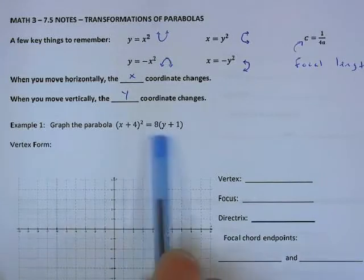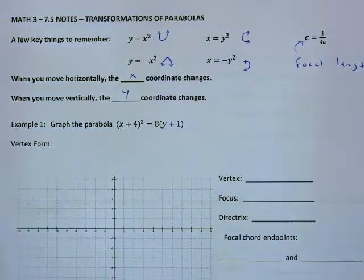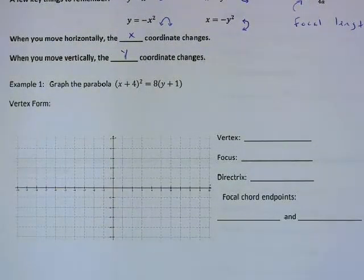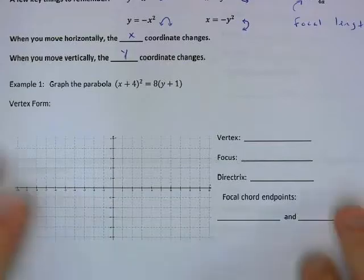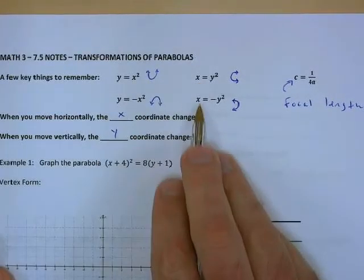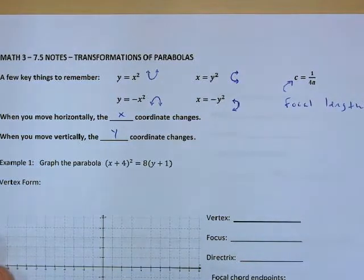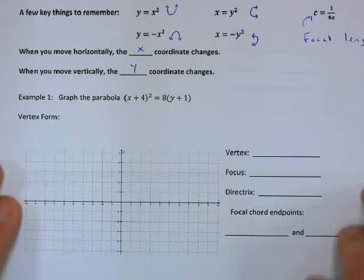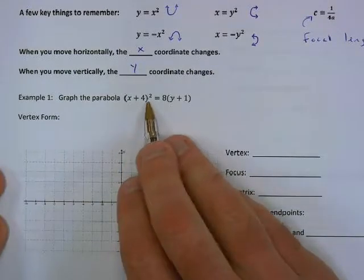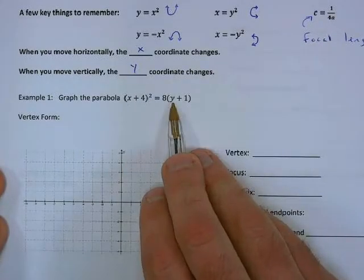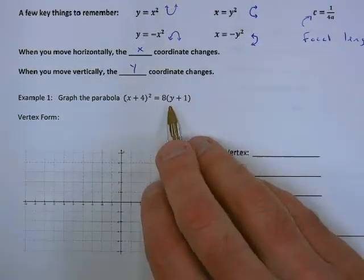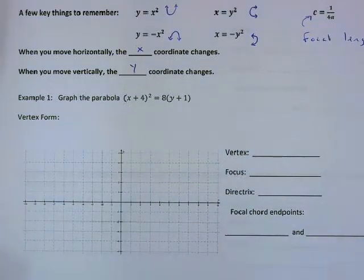First, identify which variable to isolate — the one raised to the first power. On the other side of the equals sign we have the squared part. Here we've got (x+4) squared, so that's our squared part, and y to the first is what we want to get by itself. So we want to get y isolated.